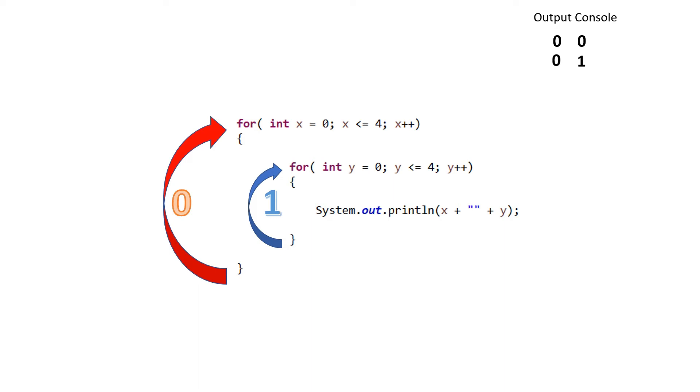Notice that because it is a print line statement, this new output goes directly below the previous output. With this cycle of the inner loop completed, the value of y is once again incremented. The flow of the program returns to the top of the inner loop, and again the value of y is checked against the condition of whether y is less than or equal to 4. Since y now has a value of 2, the condition is still true, and the inner loop is again repeated.